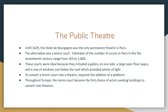A couple of things about the actual theatre buildings in which these plays were performed. We have the Hôtel de Bourgogne, the only permanent theatre in Paris. The alternative was a tennis court — we see the emergence of tennis court theatres. Estimates of the number of courts in Paris in the 17th century range from 250 to 1,800. To convert a tennis court into a theatre, you really just had to add a platform and shift the seats around a little bit. This became the first choice of actors seeking buildings to convert into theatres.